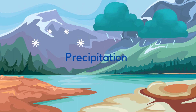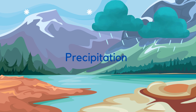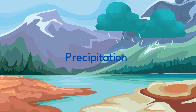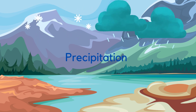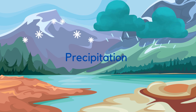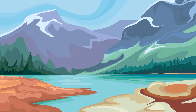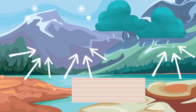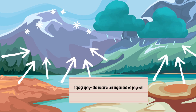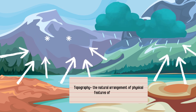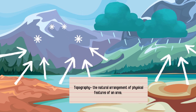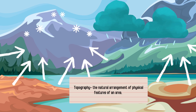Remember the water cycle? It is most likely that this water traveled via the water cycle in the form of precipitation, which is rain and snow. Due to the topography — the natural arrangement of physical features of an area — the water was able to get to the location it is now.